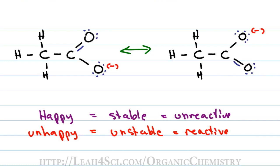With resonance, the more stable a contributing structure is, the less likely it wants to shift away from that structure. On the other hand, if the structure is not happy due to the placement of charge or lack of octet, it's going to find a way to change and move away from that structure, making it a less favorable and therefore minor contributor.